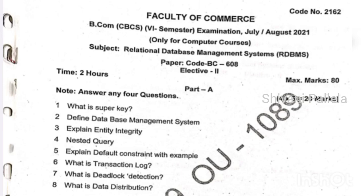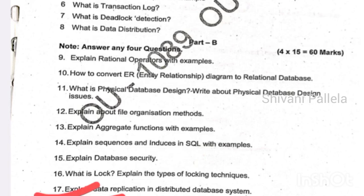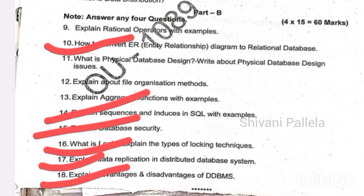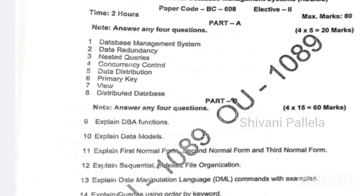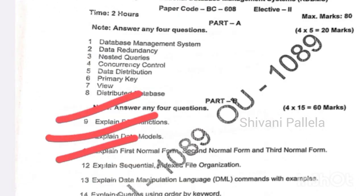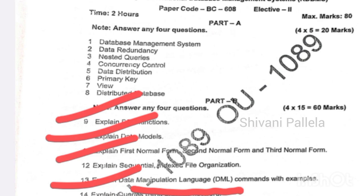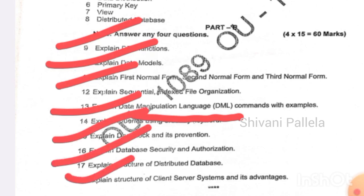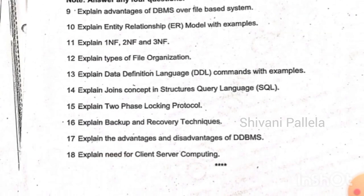In the 2021 August and July paper, topics include advantages and disadvantages of DDBMS, distributed database, data replication, deadlock and its prevention, database security, SQL commands, and ER model. In the 2020 paper, you will also find DBA, data models, first, second, and third normal forms, DML commands — data manipulation language — deadlock and its prevention, database security and authorization, and distributed data structures.